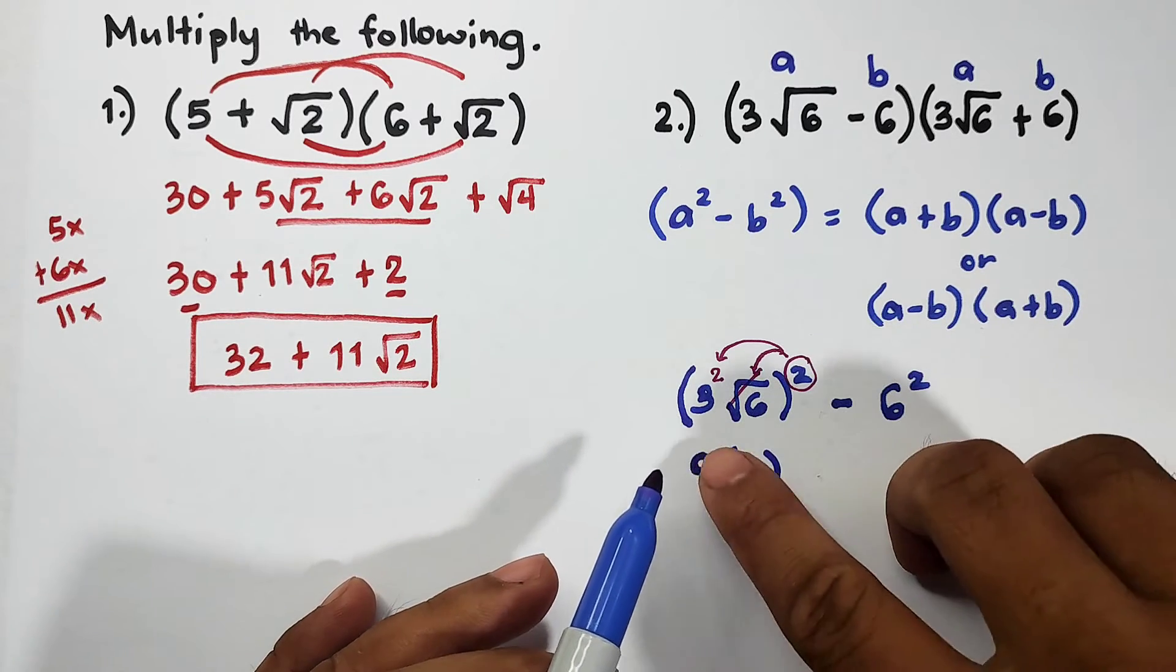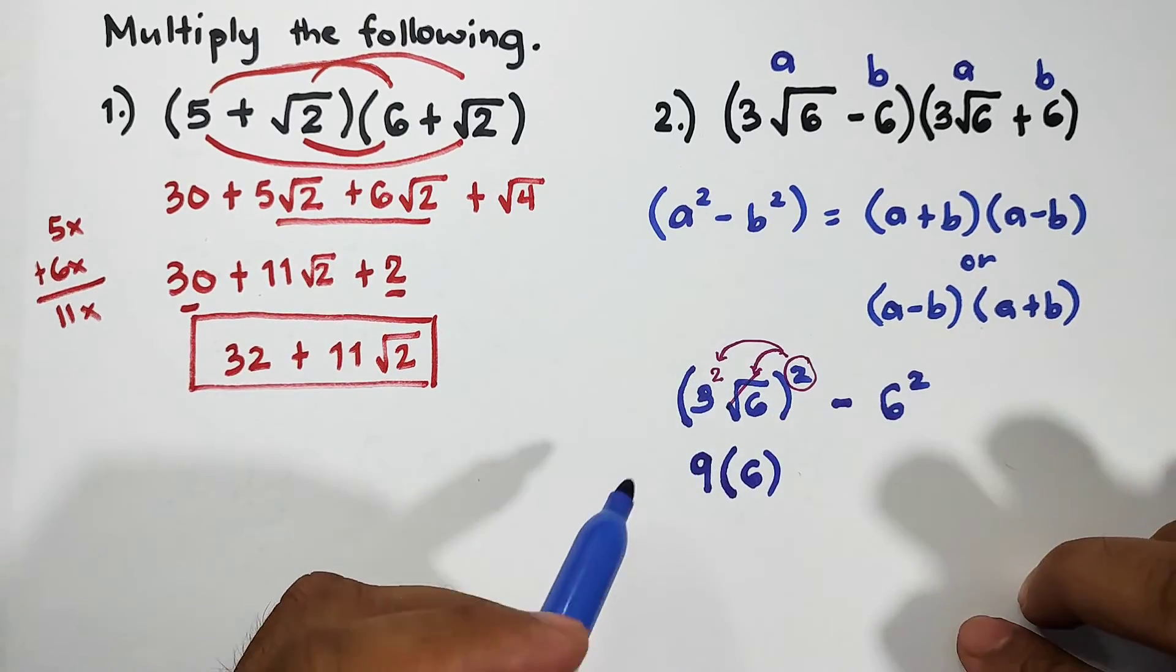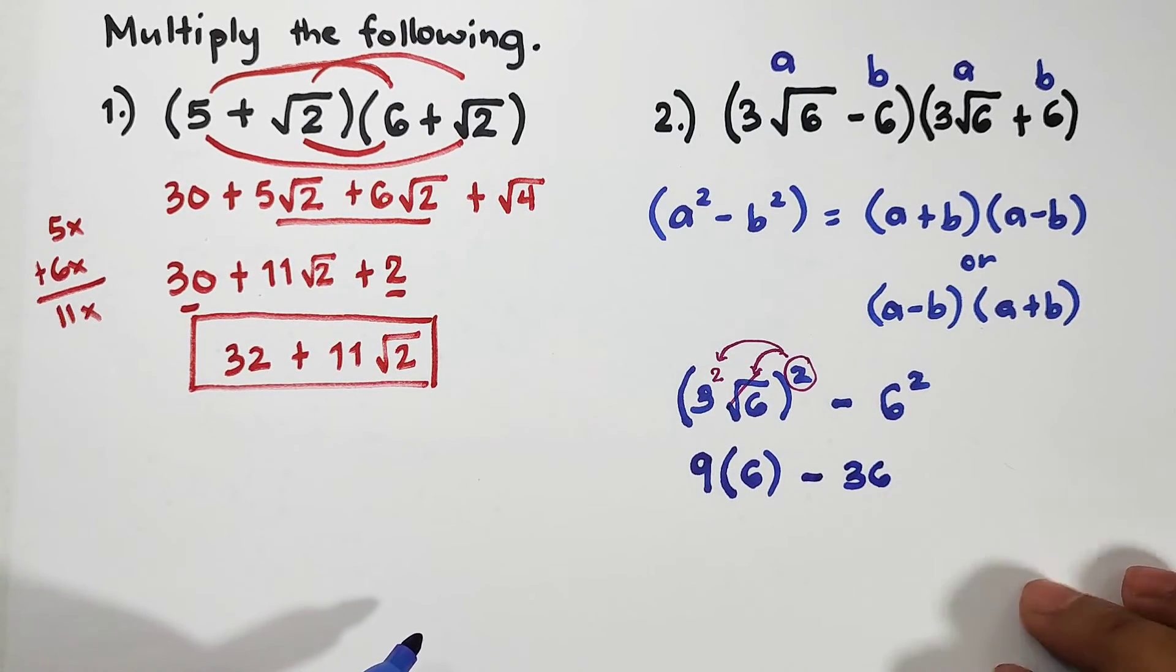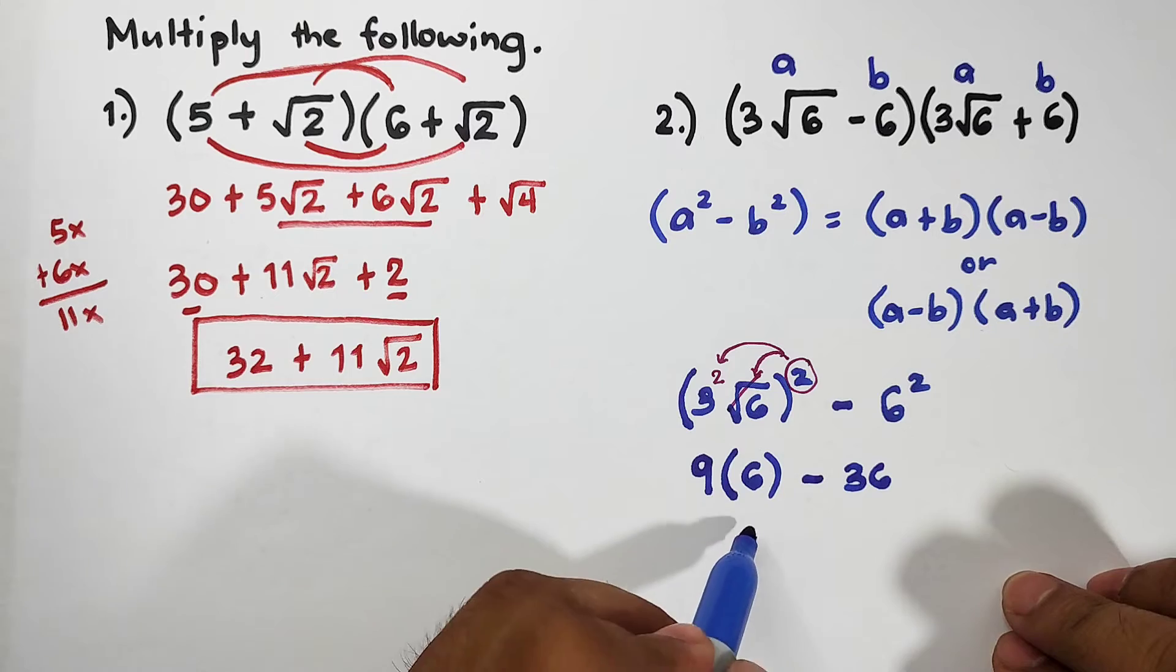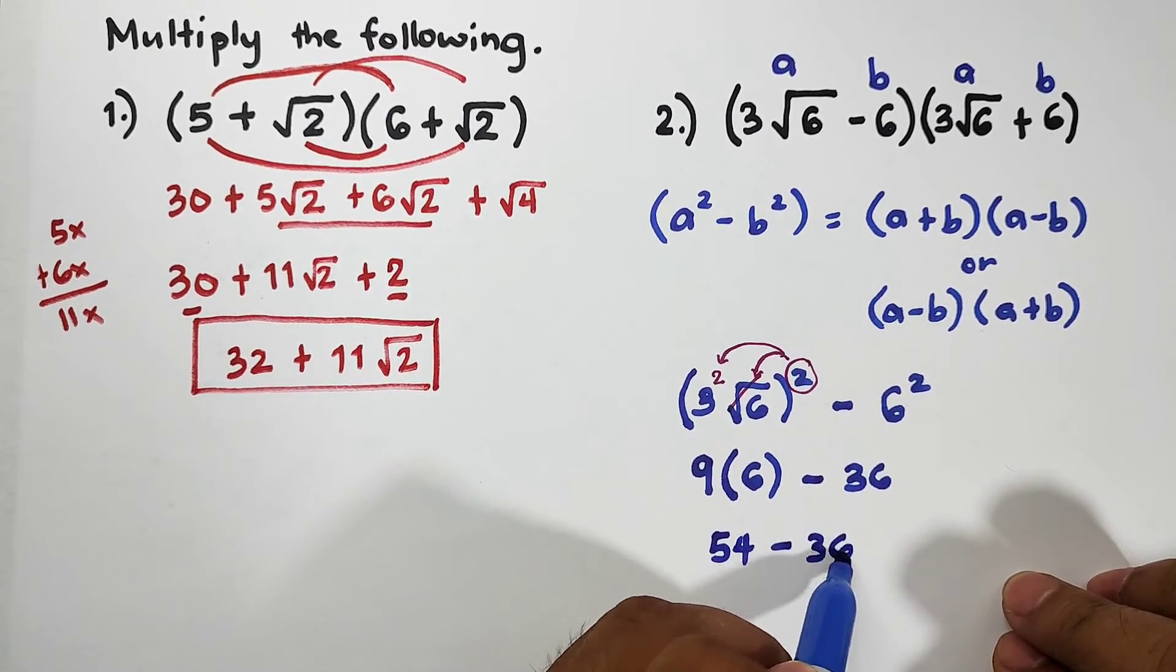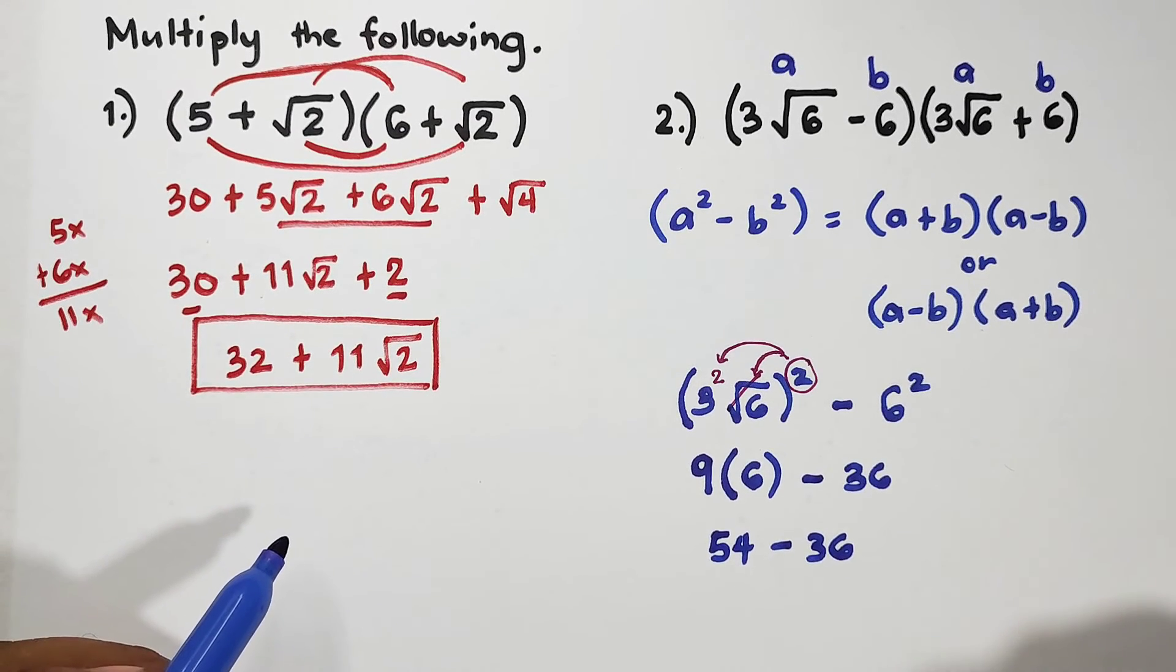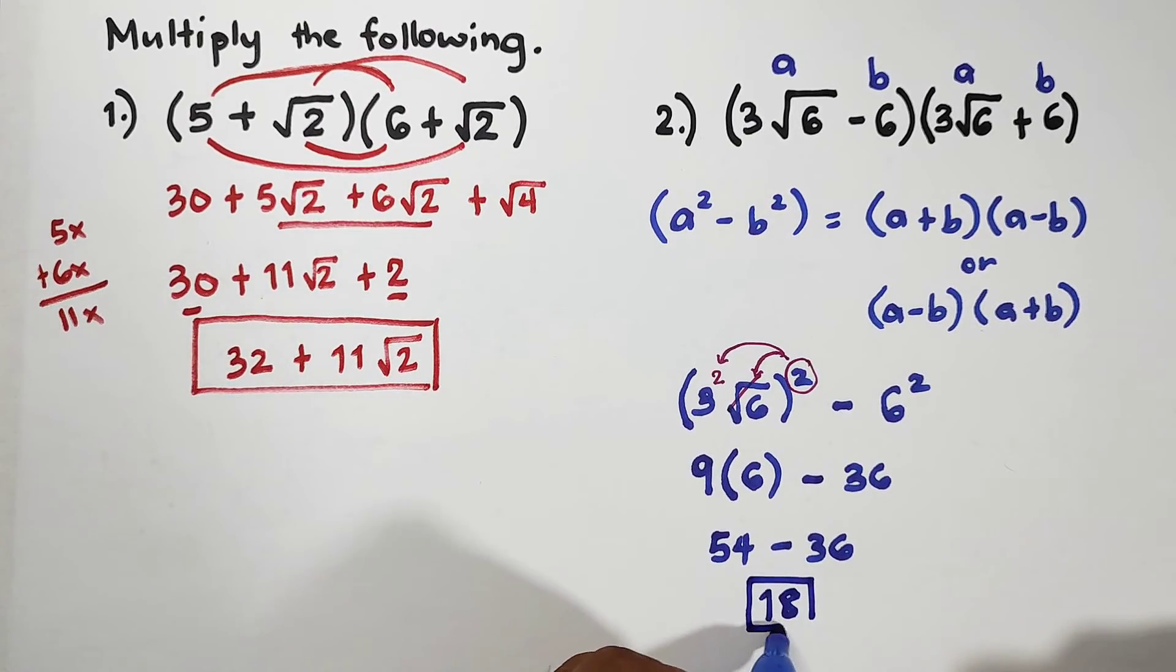So that is 9 times 6 minus 6 squared which is 36. Then multiply these numbers: 9 times 6 which is 54 minus 36. We need to subtract these numbers: 54 minus 36 is simply equal to 18, and this is now the final answer.